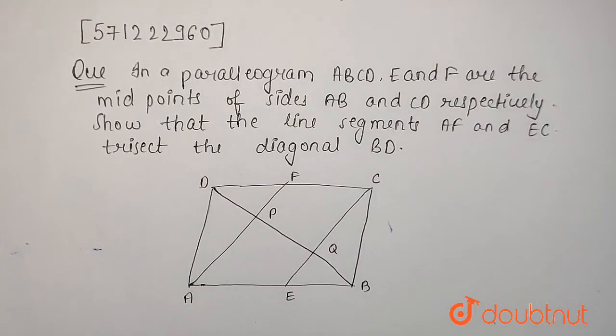In a parallelogram ABCD, E and F are the midpoints of side AB and CD respectively. Show that the line segments AF and EC trisect the diagonal BD.